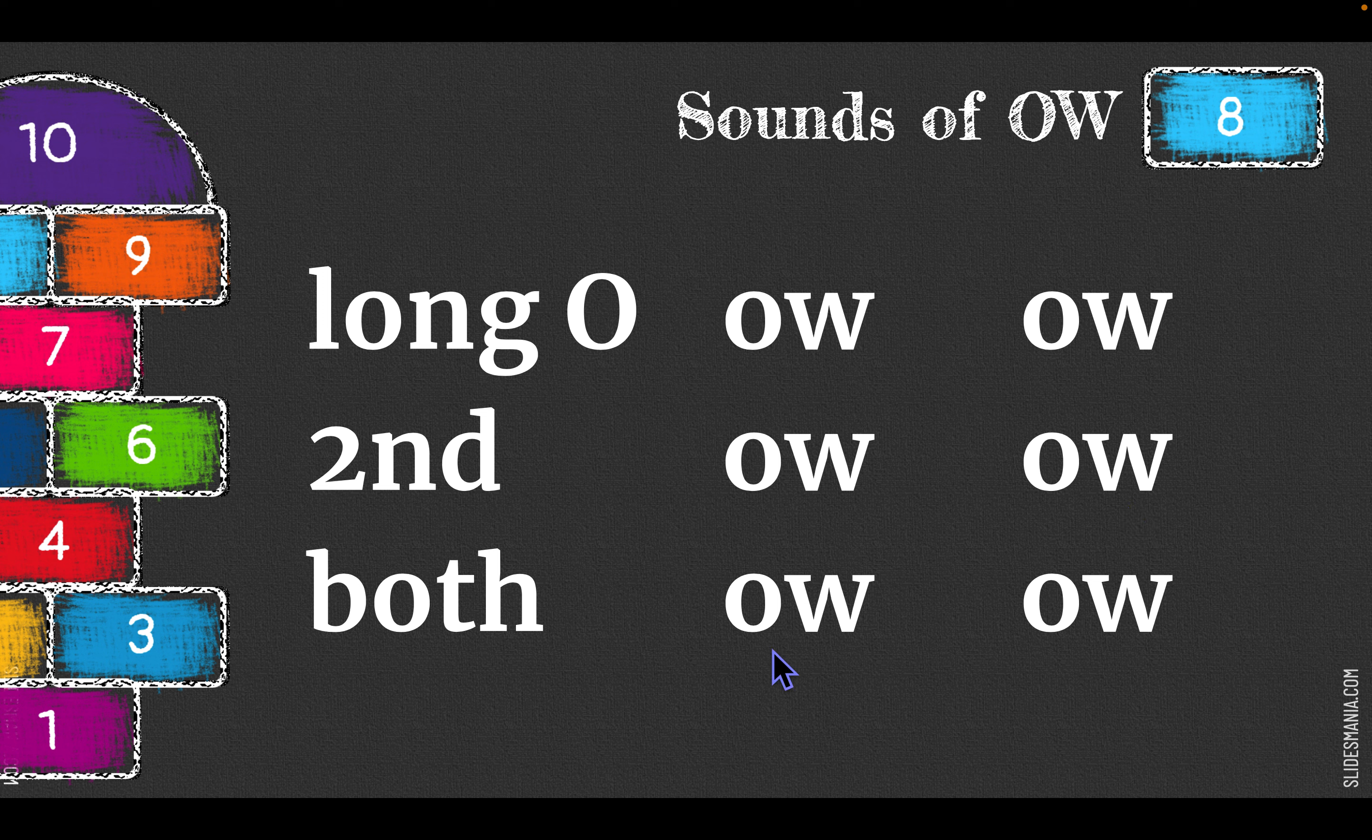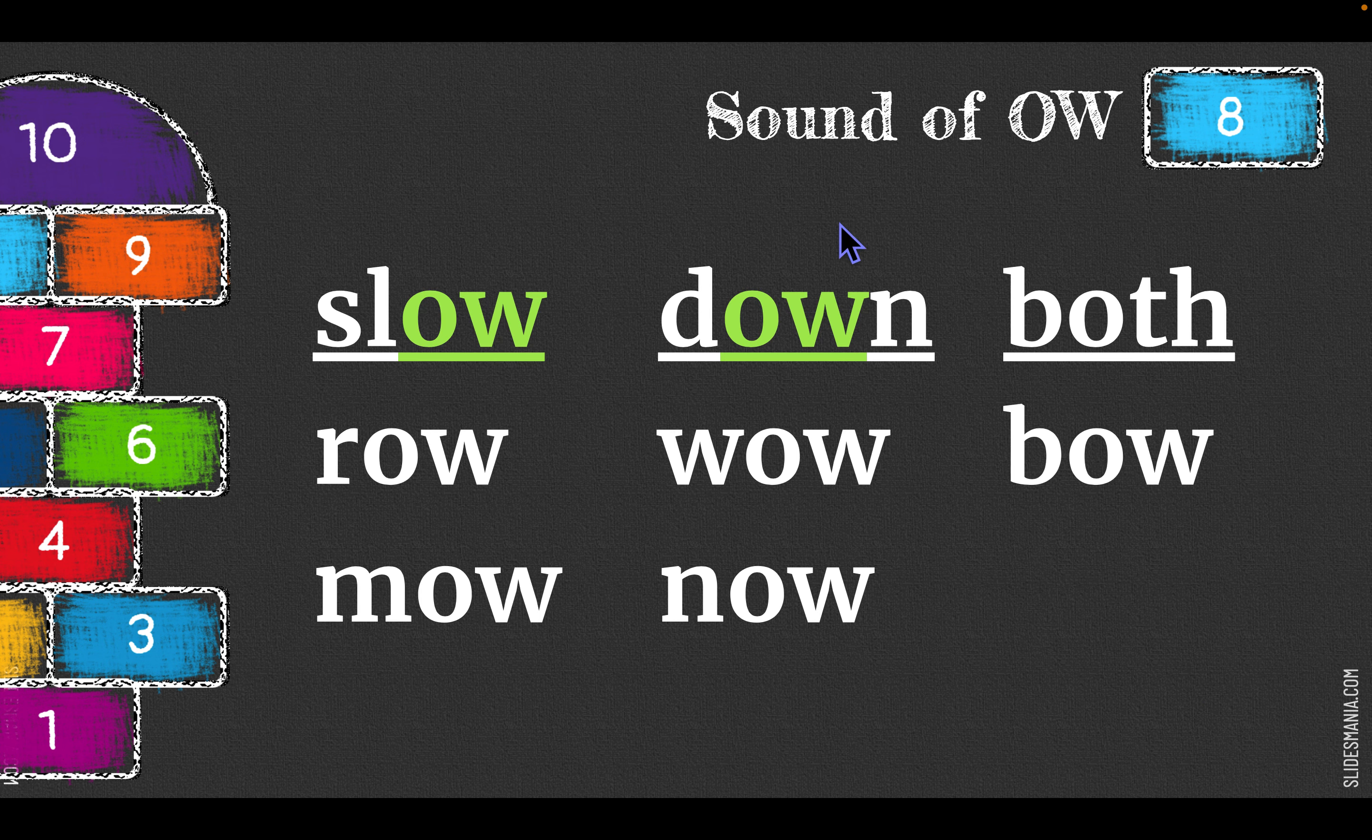Let's practice both sounds: O, OW, O, OW. The way I like to remember the two sounds is by the phrase slow down. The slow has the long O sound. Down has the OW sound.